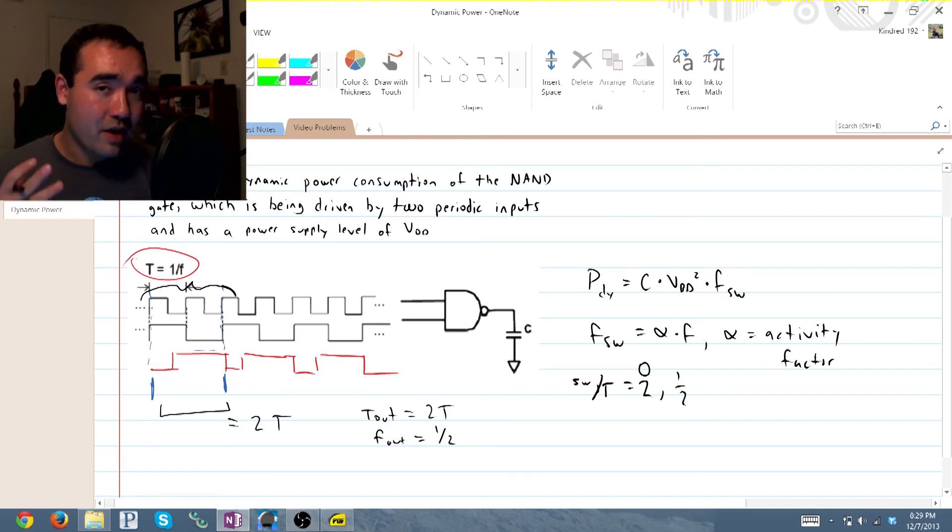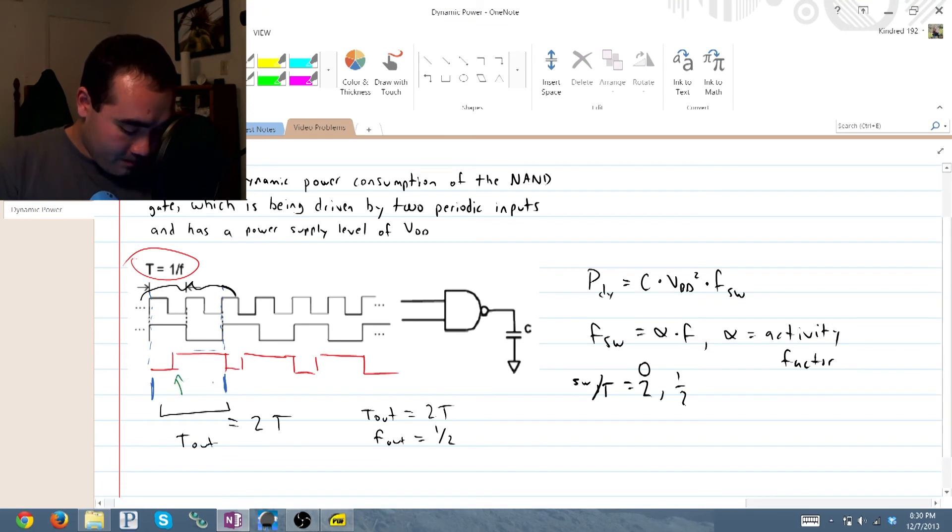Now, another way you could look at this is you could try to find the activity factor. So, this is one period T out. Over the course of that one period we switch one two times. Switching at the very edge of the period does count.